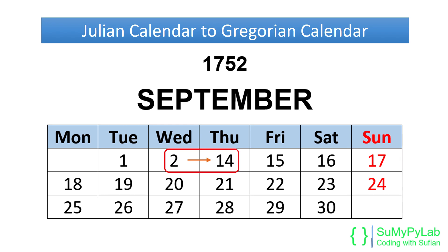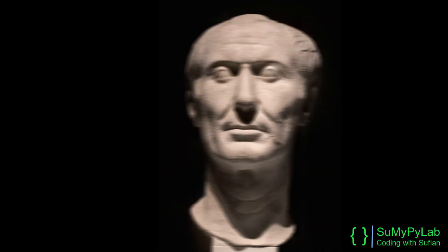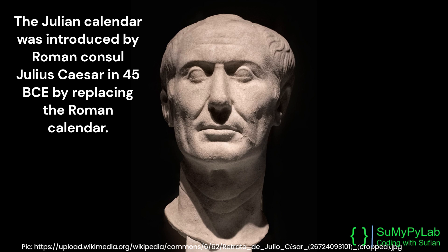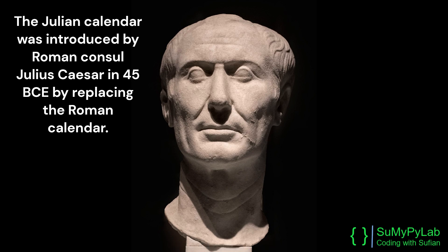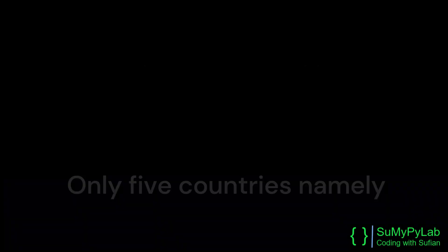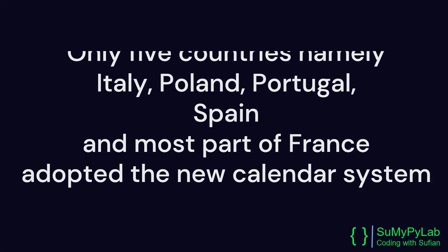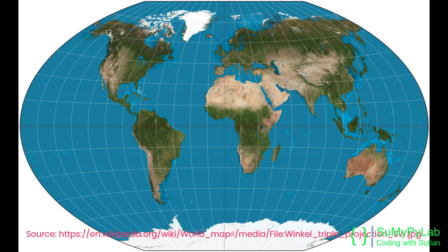The Gregorian calendar was first introduced by Pope Gregory XIII in 1582. Its predecessor was the Julian calendar. During the shifting from the Julian calendar to the Gregorian calendar, the papal bull issued by Pope Gregory XIII decreed that 10 days need to be skipped. But this direction was not obeyed all over the world at the same time. Only five countries — namely Italy, Poland, Portugal, Spain, and most part of France — adopted the new calendar system.